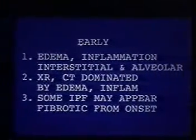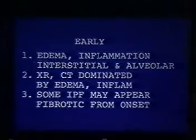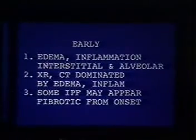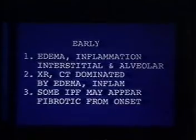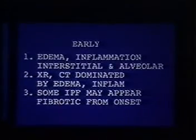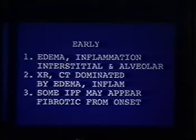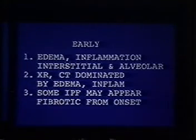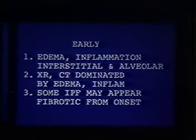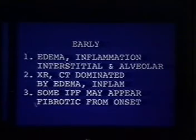Early in the development of fibrosis, one has interstitial and/or alveolar pneumonitis. There is edema and inflammation, both interstitial and alveolar, and x-ray, CT, or any other imaging is going to be dominated by this process. Therefore, the fibrosis, even though it's very extensive histologically, may not be apparent radiographically. Some patients with IPF never seem to develop this phase radiographically — they appear to have a fibrotic appearance right from the beginning, which may be slowly or actually rapidly progressive.